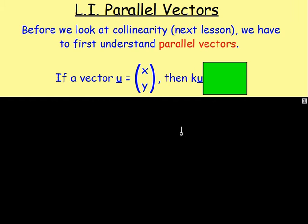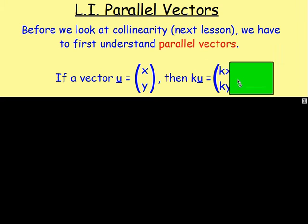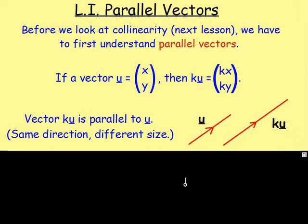Imagine if you've got a vector u which has components x, y, then ku — well, you're multiplying by a scalar, so you're multiplying the x and the y by k. So you'd end up with kx, ky. If you had them plotted, then you could have vector u with a certain length and certain direction. If you plot ku as well, you'll see that the direction remains the same, but it will be a different size. But both vectors will be parallel.